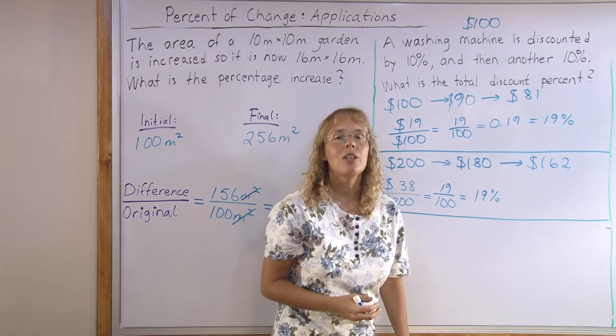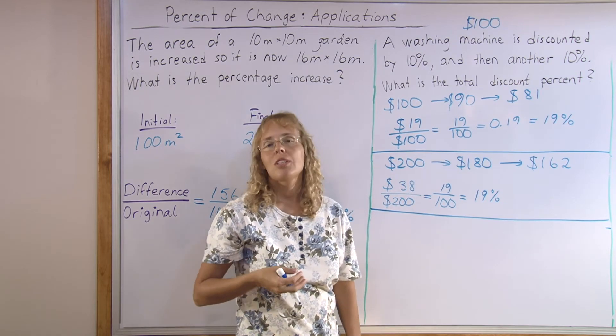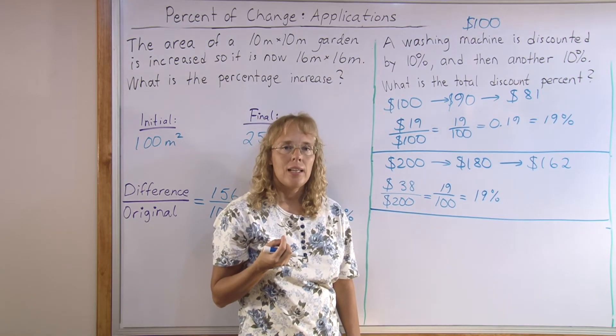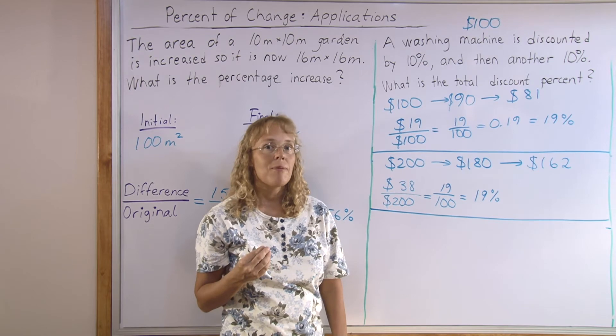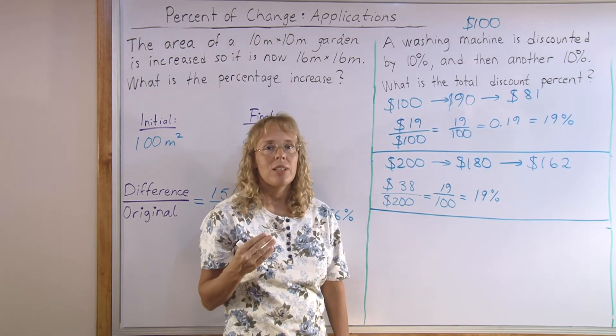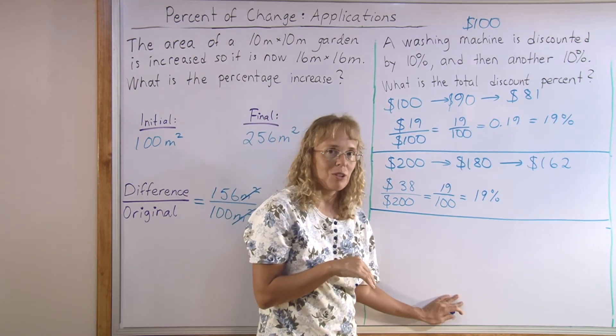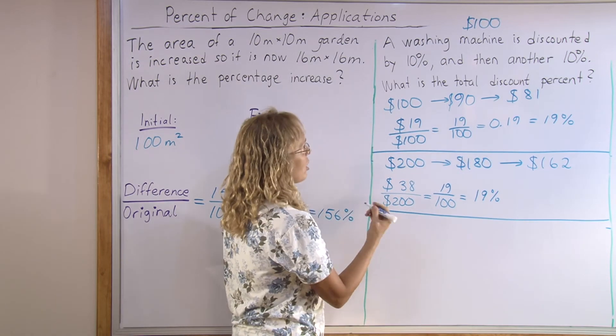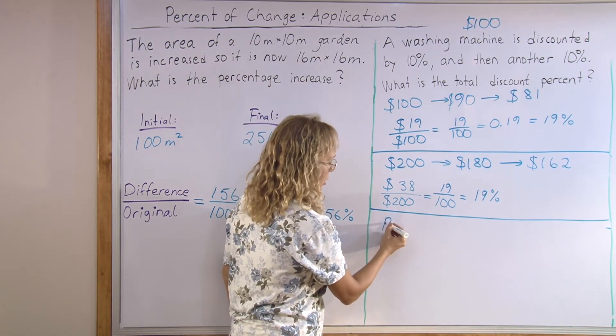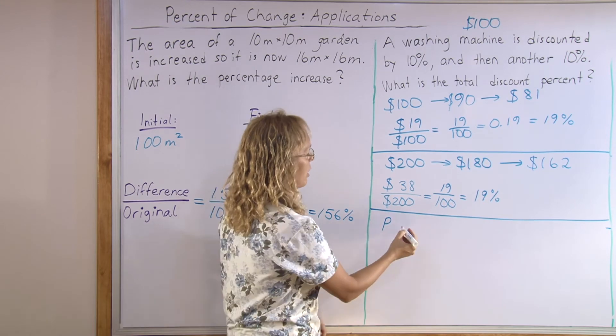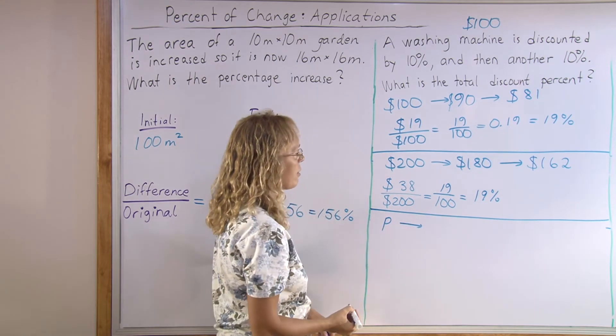I'm gonna show you the solution one more time using a variable. And this means we're using algebra. And if you're not familiar with algebra, then don't worry about this solution. The original price is P. You know, we don't know it. We have a variable for it.